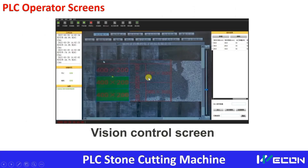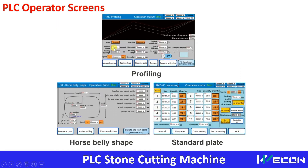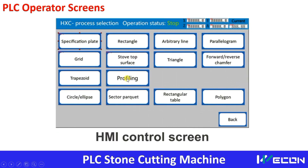This is how the PLC operator screen looks like, and the vision control screen looks like this — you can see the dimensions, and based on these dimensions the cutting wheel will be operated. This is the shape selection screen — based on the shape you select, the respective screen will open. You can see this is the screen for profiling, and if you click on this button, the profiling screen will open.